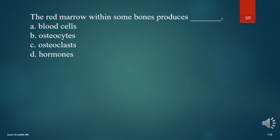The red marrow within some bones produces what? A. Blood cells. B. Osteocytes. C. Osteoclasts. D. Hormones. The answer is A. Blood cells.